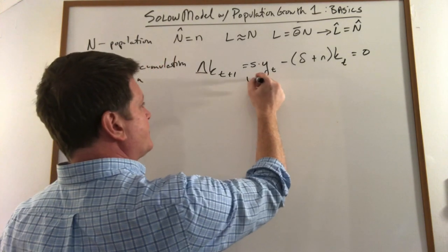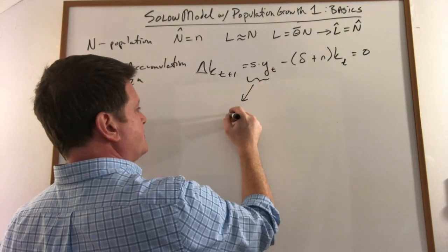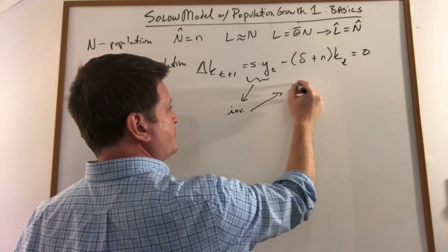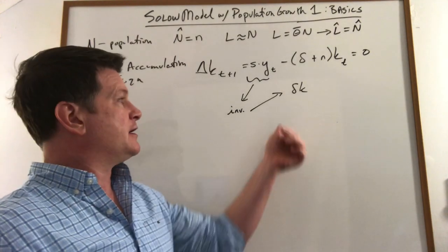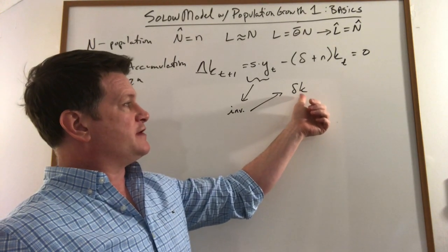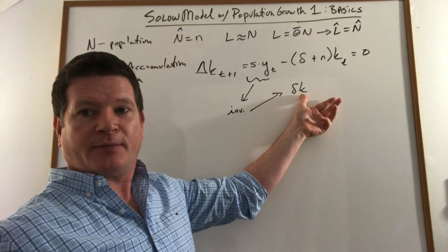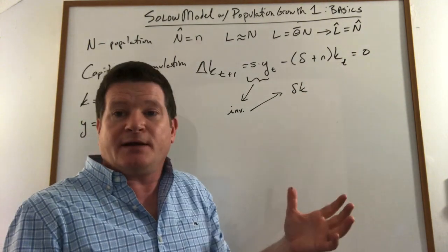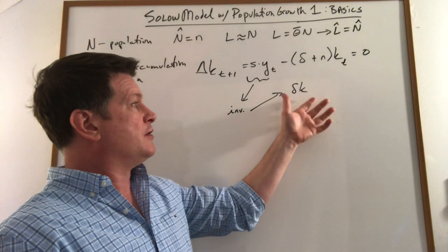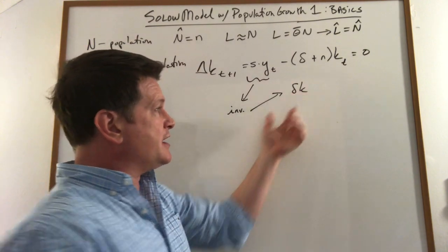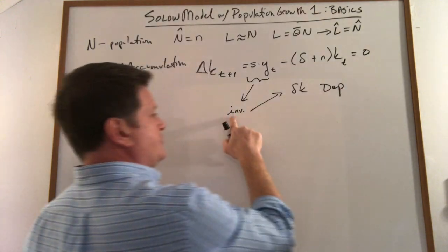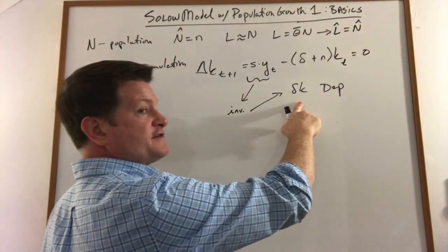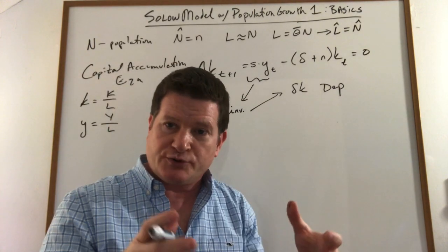In this case your investment has to account for two things. One it has to be enough to offset the percent of depreciation times the total amount of capital. So a bigger building depreciates at 10 percent there's more to do than a tiny building depreciating at 10 percent. So your depreciation you have to allocate some of your production today just to offset depreciation otherwise your capital stock will shrink.